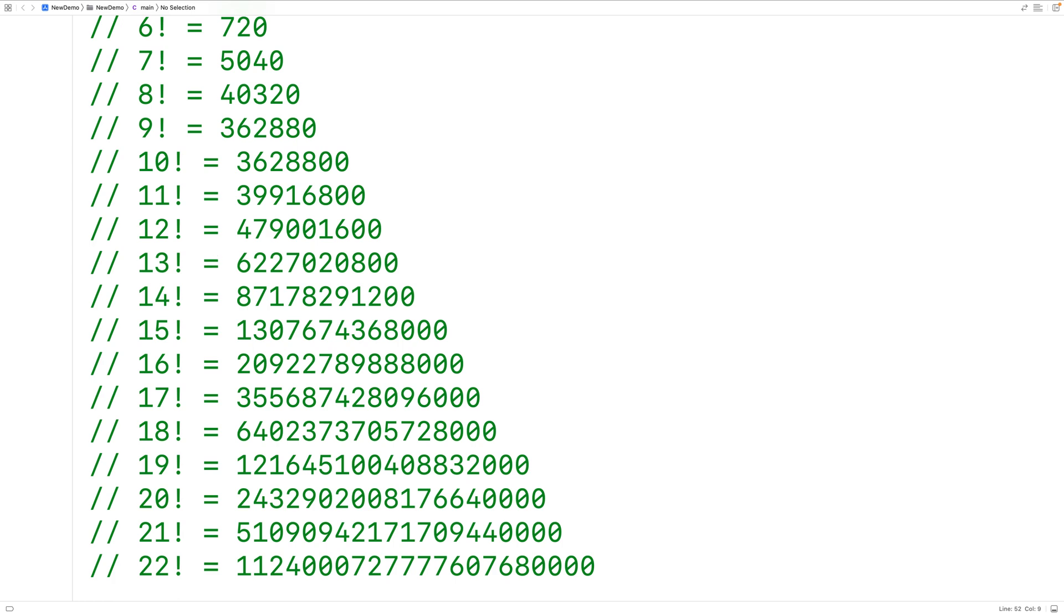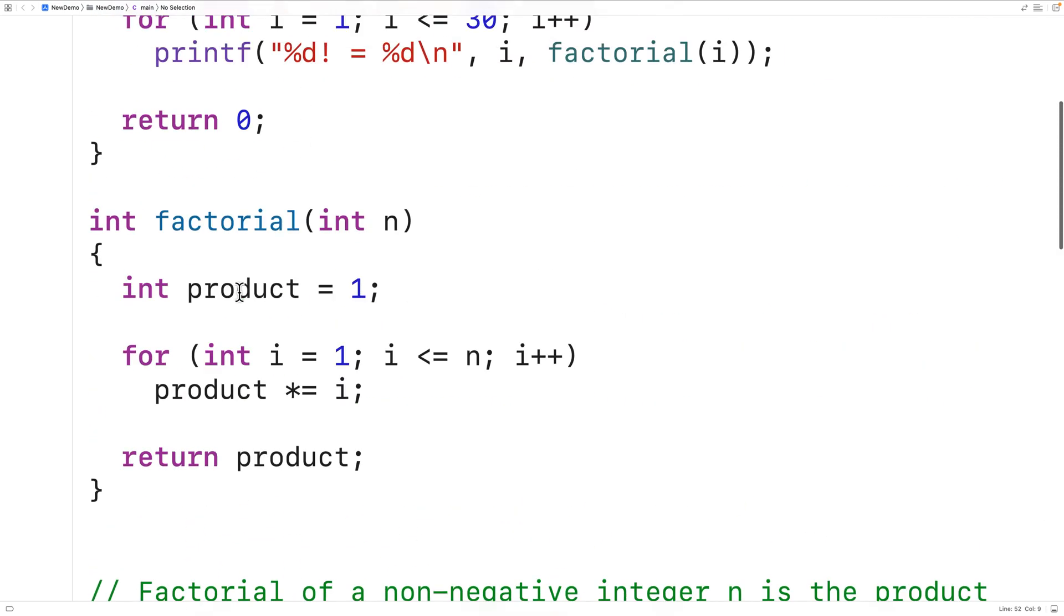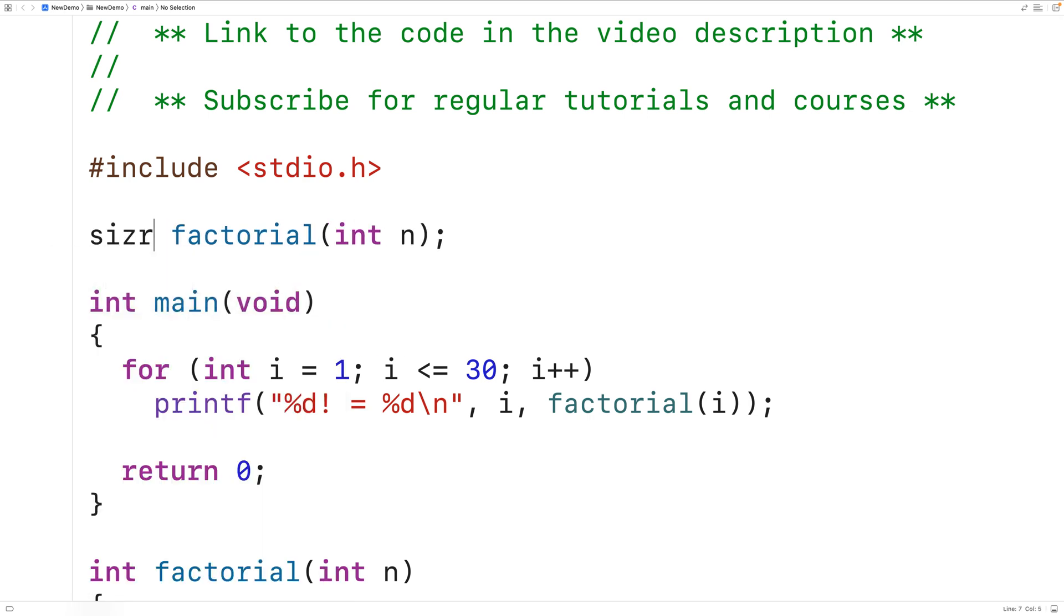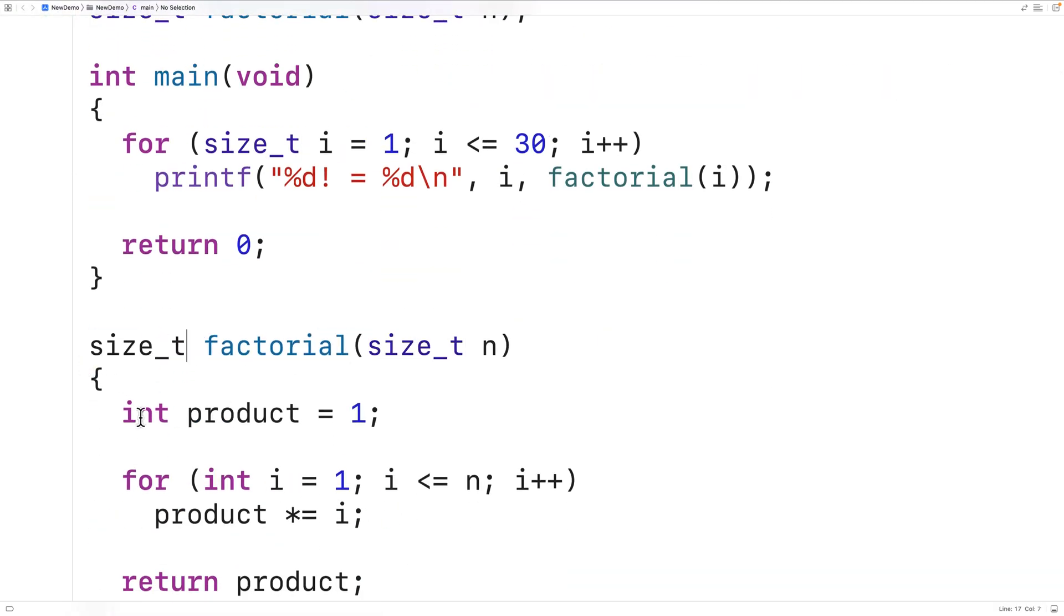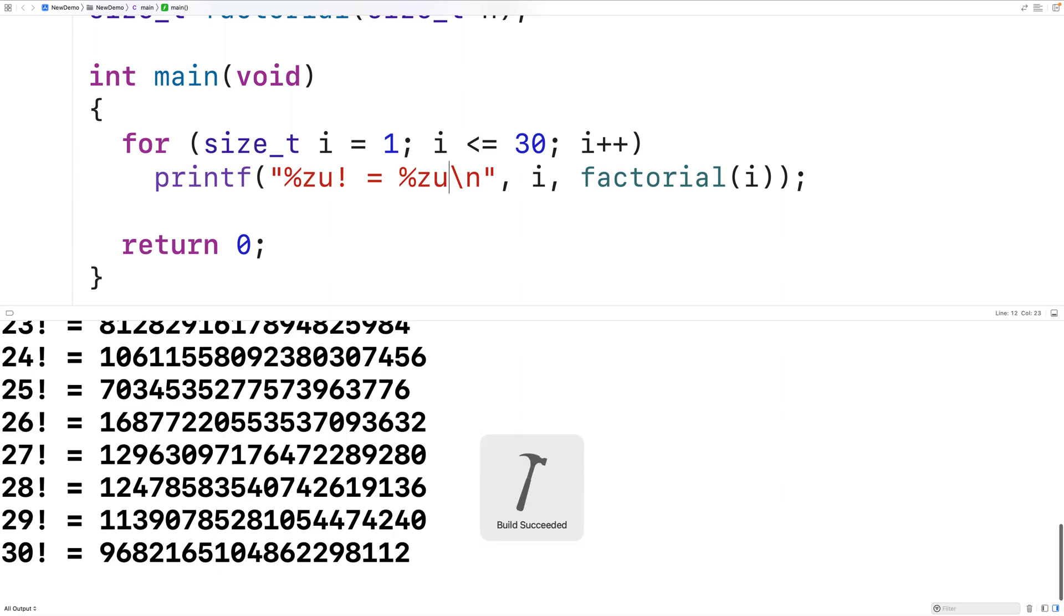What we could do to improve things a little bit is use a different type. So there's a type called size underscore T in C. That type can store larger non-negative integers than int. We could try to change the type used. Instead of int, we'll have size underscore T. So we're going to replace all the usages of int with size underscore T. And then here, we're going to have percent ZU and percent ZU, because ZU can be used to output very large non-negative integers. So we can save, compile, and run the program.